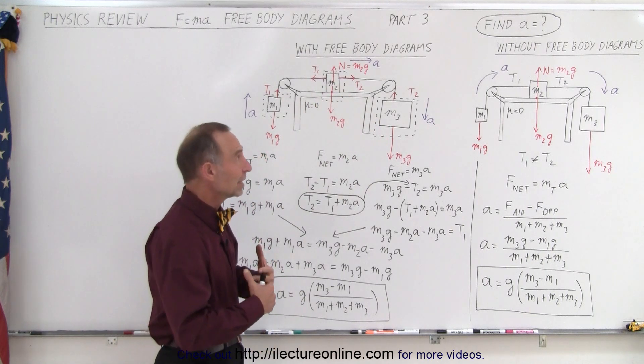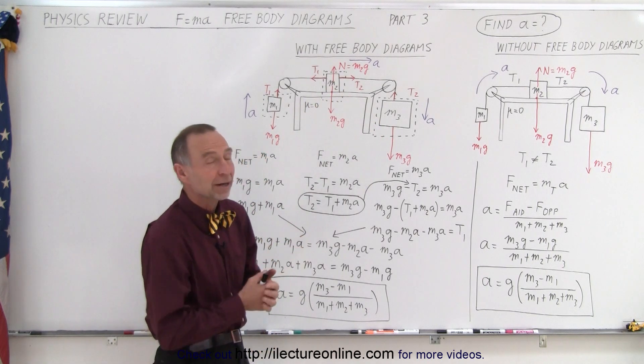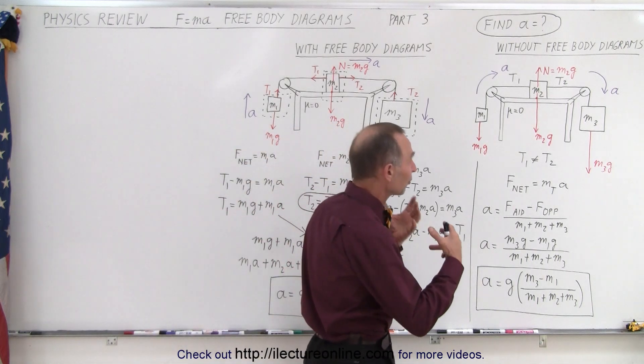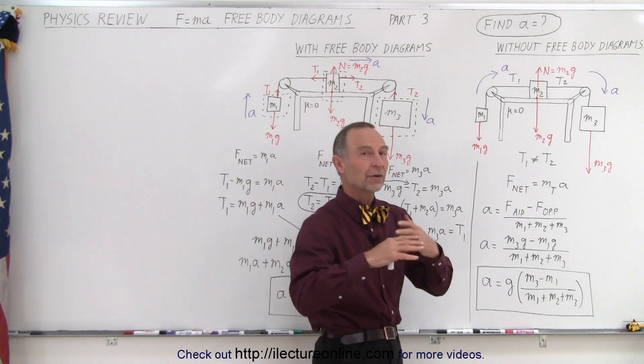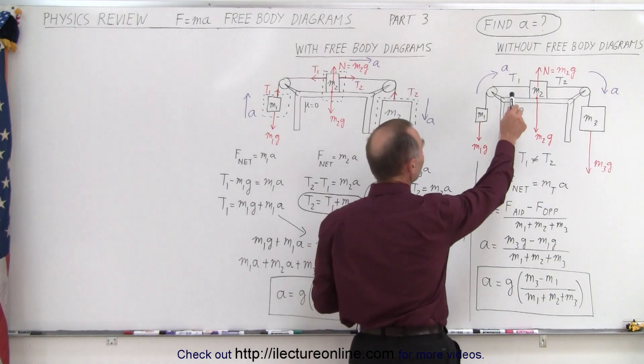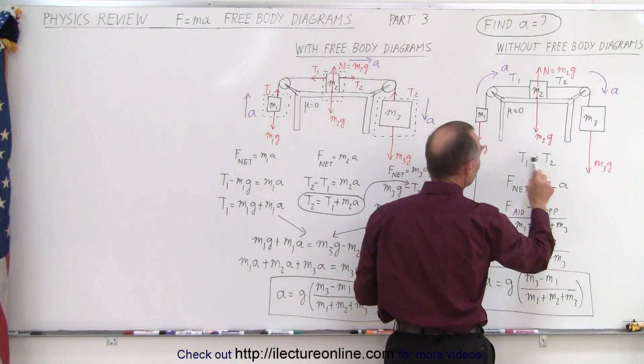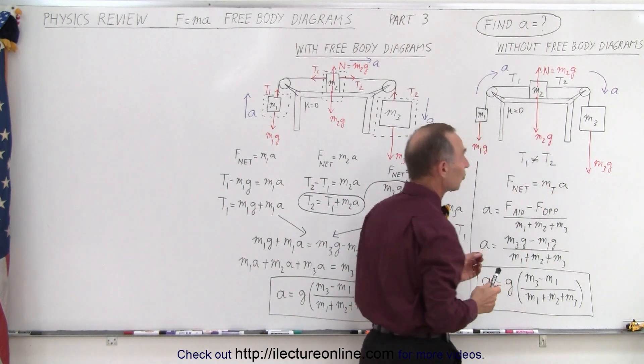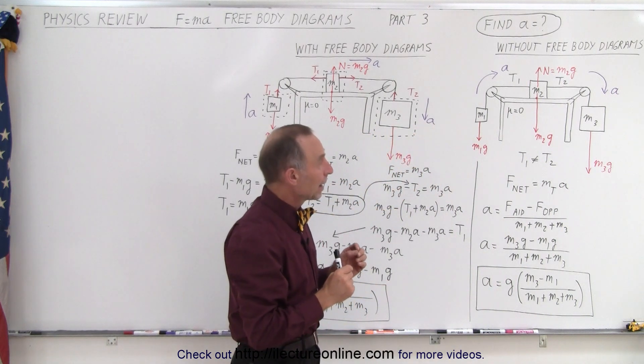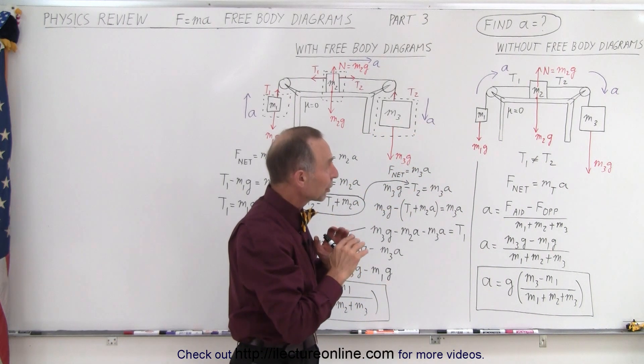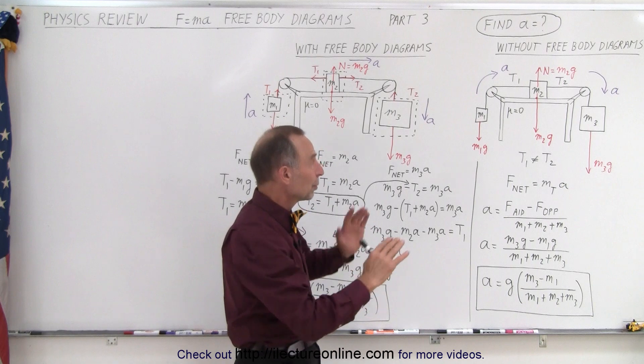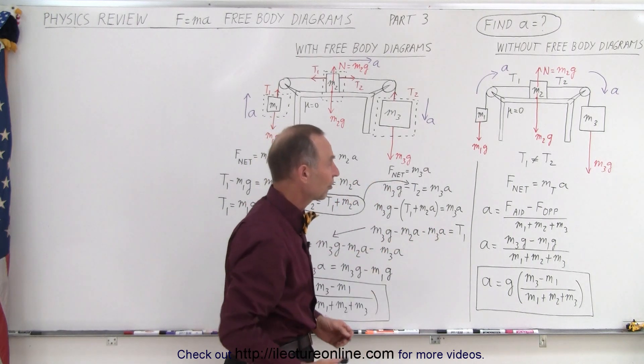If we use the non or without free body diagram method, you can see here that we use the principle that all internal forces are ignored. In this case, we have two tensions, tension one and tension two. They are not equal to each other because they're two different strings. But what we can do here is ignore T1 and T2 because they're internal to the system.